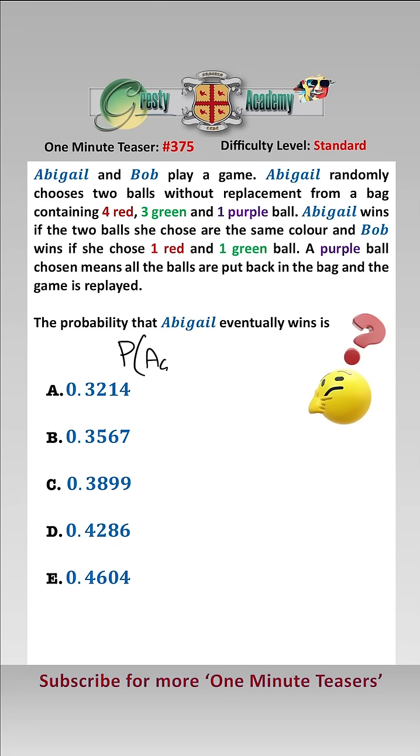So the probability that Abigail wins a game is equal to the number of ways that she could pick two reds from four, which is 4c2,